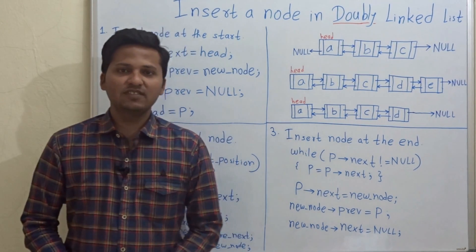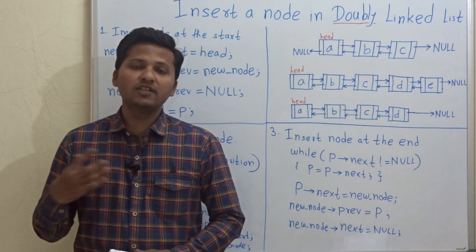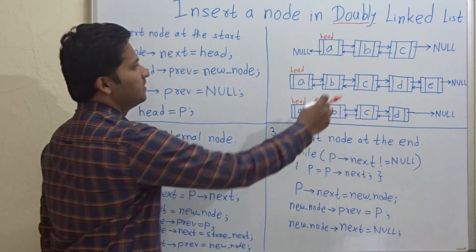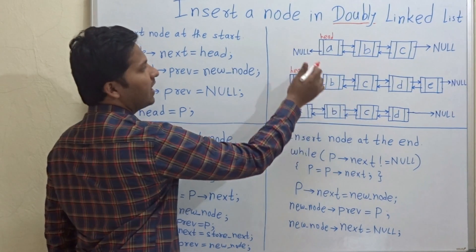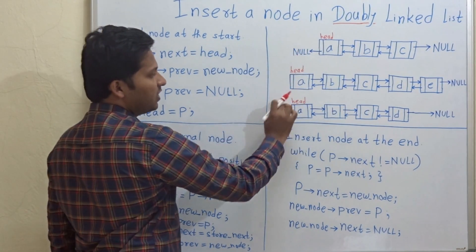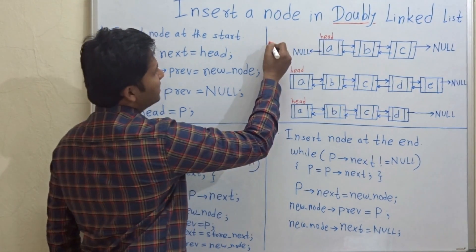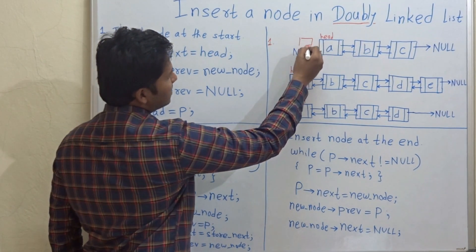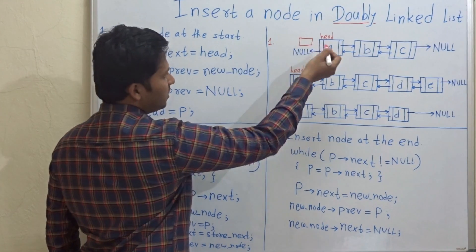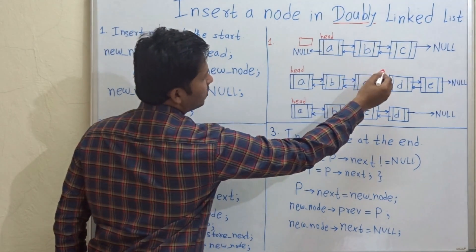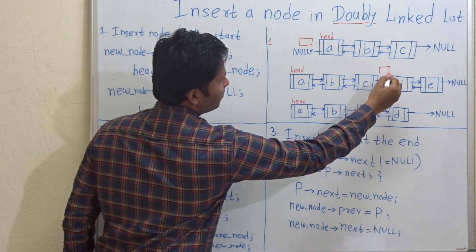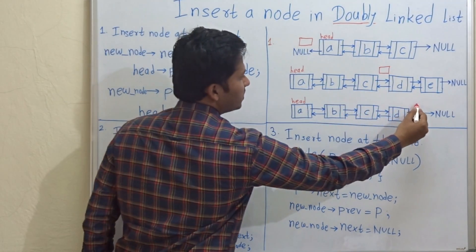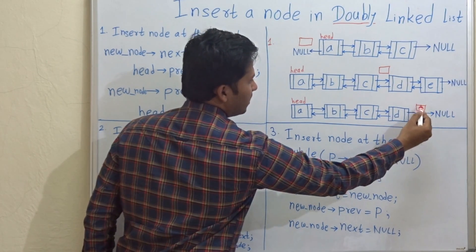Hello friends, today we are going to see how to insert a node in a doubly linked list. So let's see some cases. These are the three examples and they represent three different cases. The first case is the node which we want to insert is at the starting of the linked list. The second case is we want to insert the node somewhere in the middle, and the third case is we want to insert the node at the end.